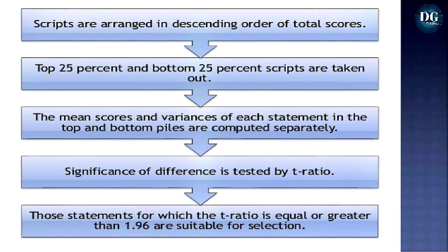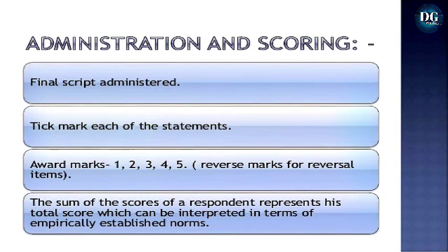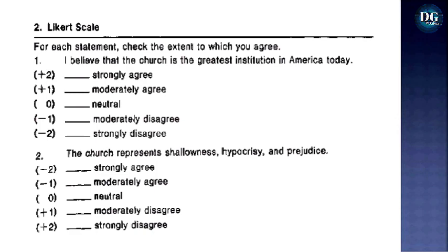Statements for which the t-ratio is equal to or greater than 1.96 are suitable for selection. All statements are sorted in descending order of t-values. The top 10 to 15 favorable and unfavorable statements are selected and arranged randomly for the final draft. For administration and scoring, marks awarded are 1 through 5, and the sum of the scores represents the respondent's total score, interpreted in terms of empirically established norms.